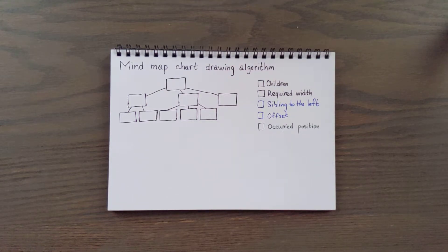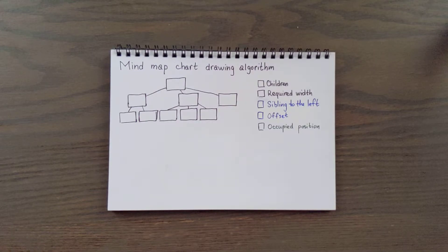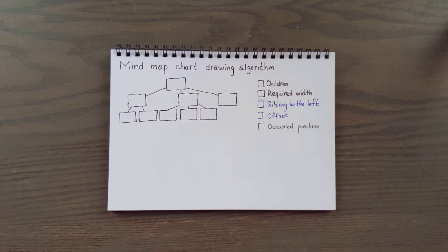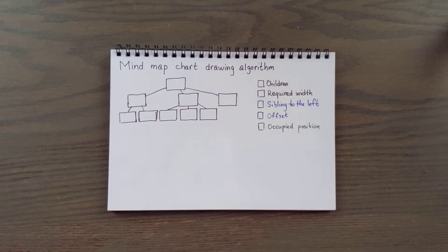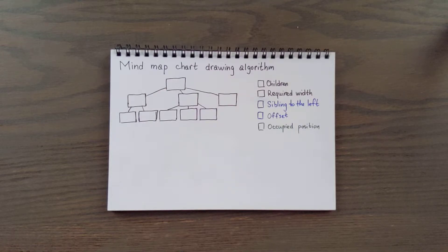Hey, this is Paul. In this short video I want to explain how I'm drawing my mind map that I shared in the community. The algorithm is pretty simple — just let me explain this, and hopefully it helps you do something of your own. Maybe you want to modify it or draw something else. It might be useful to understand how it's calculated, because if you just look into the DB items table there's a big chance you're just going to be confused.